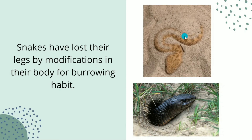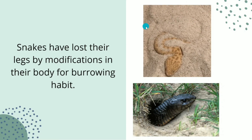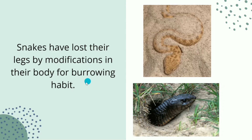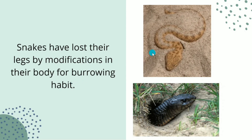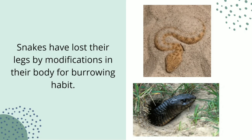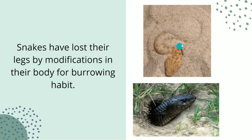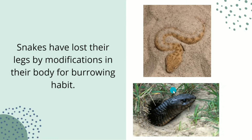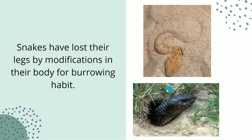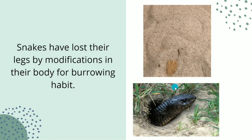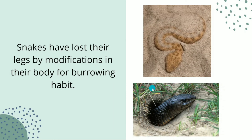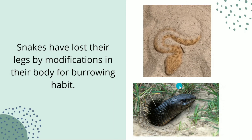The last example is of snakes. We wonder why snakes don't have limbs — no legs or hands. That is because snakes have lost their legs by modifications in their body for burrowing habits. Since they burrow, they have no use for legs or hands. They just use their body in particular movements to burrow inside the ground. Due to the disuse of hands and legs, these must have degenerated after several generations.